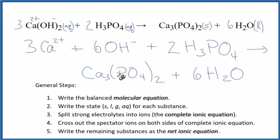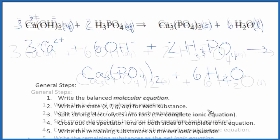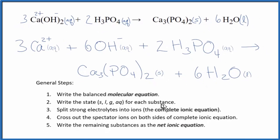Let me clean this up and add the states in. And we'll have our net ionic equation for Ca(OH)₂ plus H₃PO₄. So this is the complete ionic equation and the net ionic equation for calcium hydroxide plus phosphoric acid.